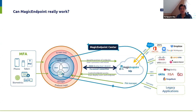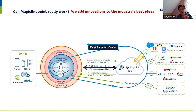We did not invent everything, but what we did is take industry-based ideas and add our innovation on top to implement this. The industry-based ideas with regard to authentication are three things: FIDO, zero-trust, and federated authentication — what the industry has created in the last 10 years to make online authentication possible and secure for users and companies.